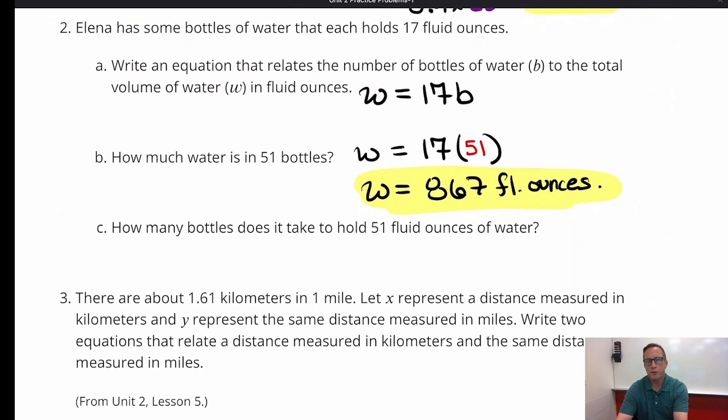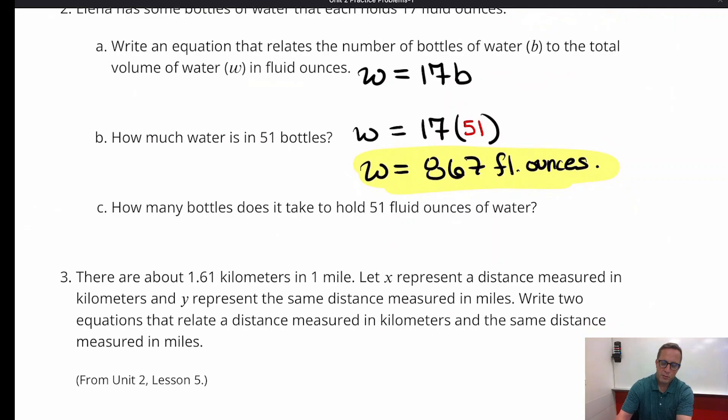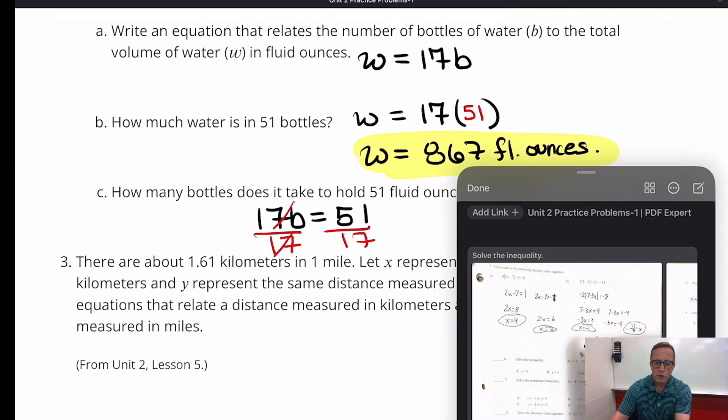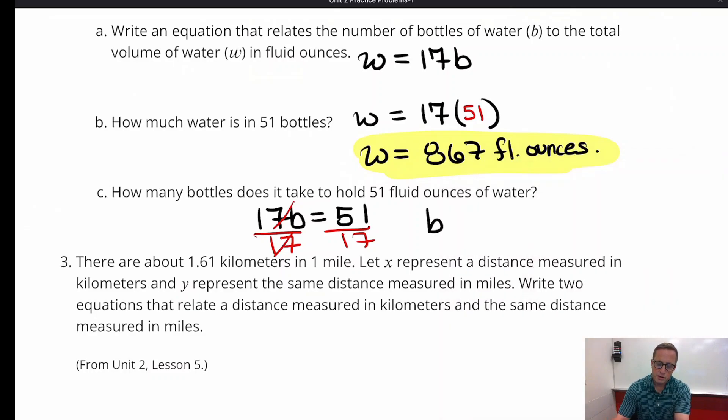So you can see which way this is going. For C, it says how many bottles does it take to hold 51 fluid ounces of water. So this time we're going to set it up with the equation. 17B equals 51. Because we're looking for B this time. We're looking for how many bottles it is. And this problem we're going to divide by 17. Divide both sides. What you do to one side of the equation, you do to the other. Those cancel off. They turn into 1, or in other words, 1B. And you get B equals, and 51 divided by 17 is 3. So 3 bottles. 1 bottle is 17 fluid ounces. 2 bottles is 34. 3 bottles is 51.